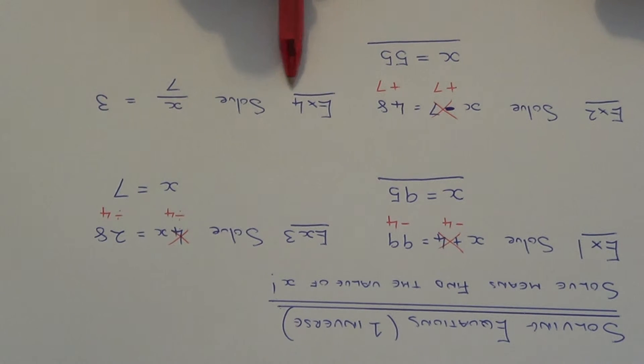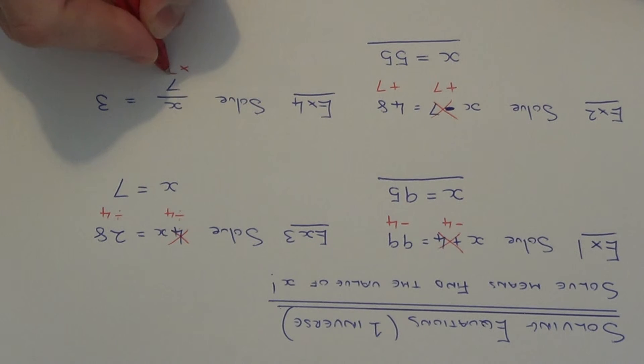So in our final example then we have x over 7 equals 3. So this time x is being divided by 7. So the opposite to divide by 7 is times 7.